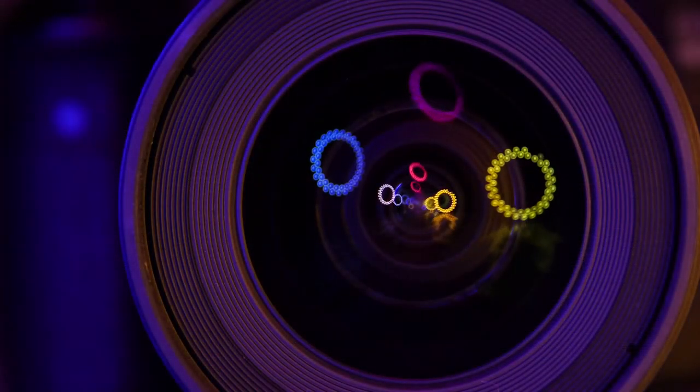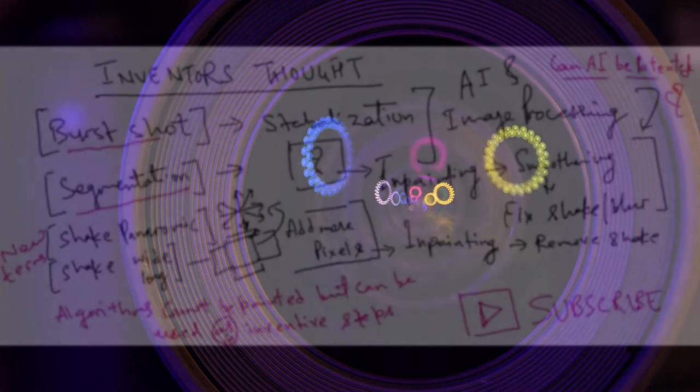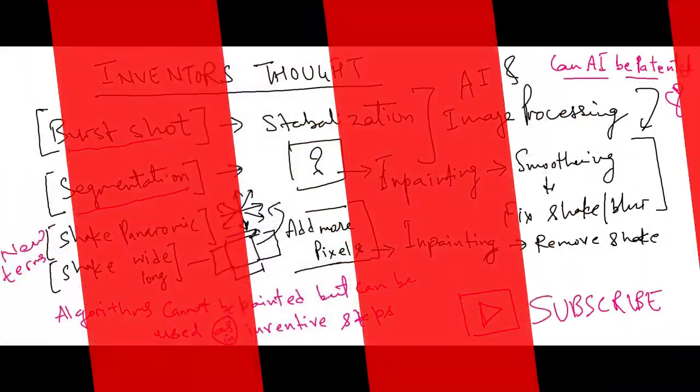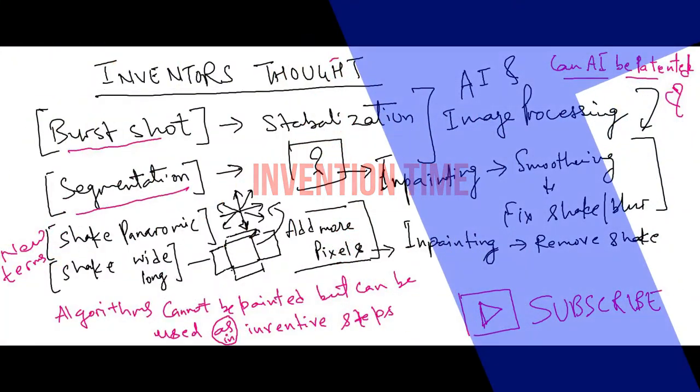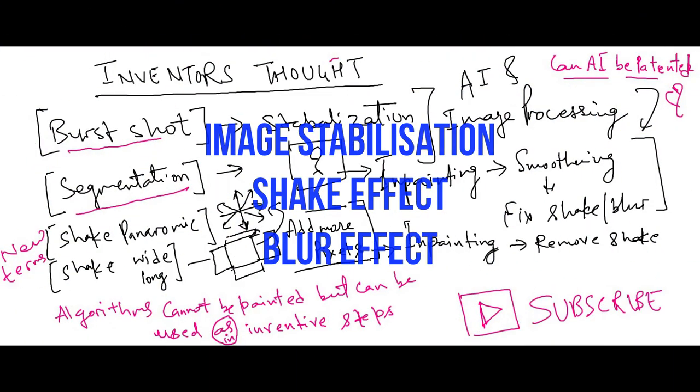Please refer to the patented invention for details. It's invention time. Image stabilization or blur effects can be removed from software algorithms.